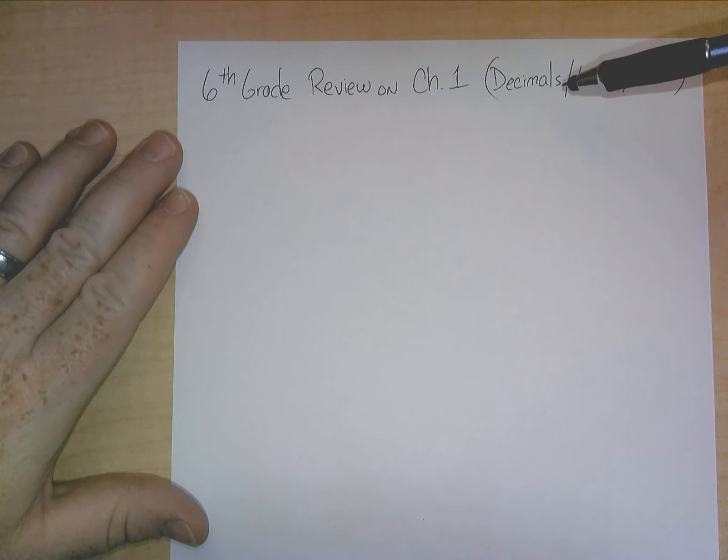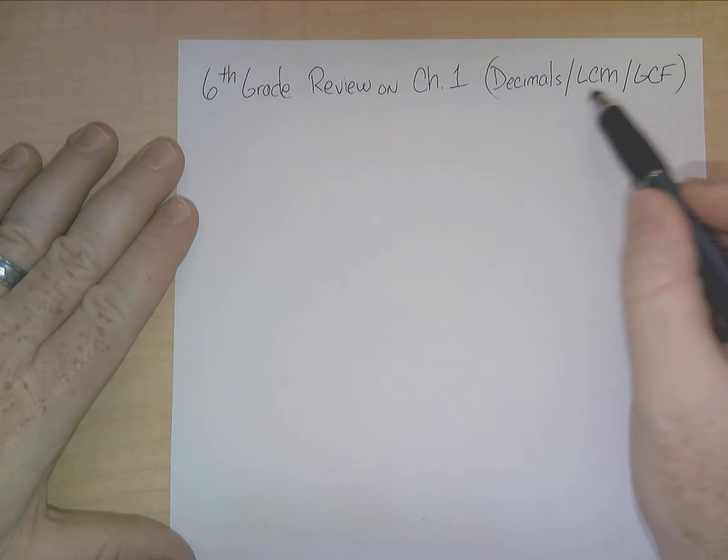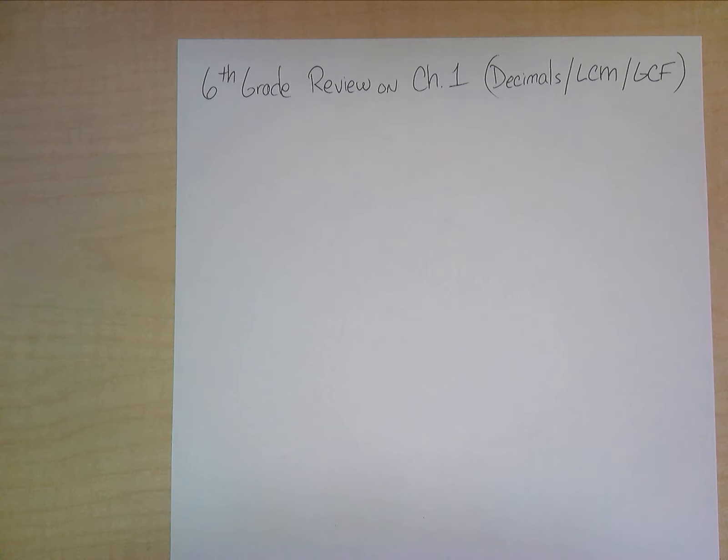We're going to quickly go over the least common multiple and greatest common factor and how we achieve that using the Venn diagram. Of course, you could use the listing method for either one of those, but I think the Venn diagram is going to be helpful. My goal is to hit about 10 minutes, hopefully not longer than that. All right, so let's go ahead and get started.